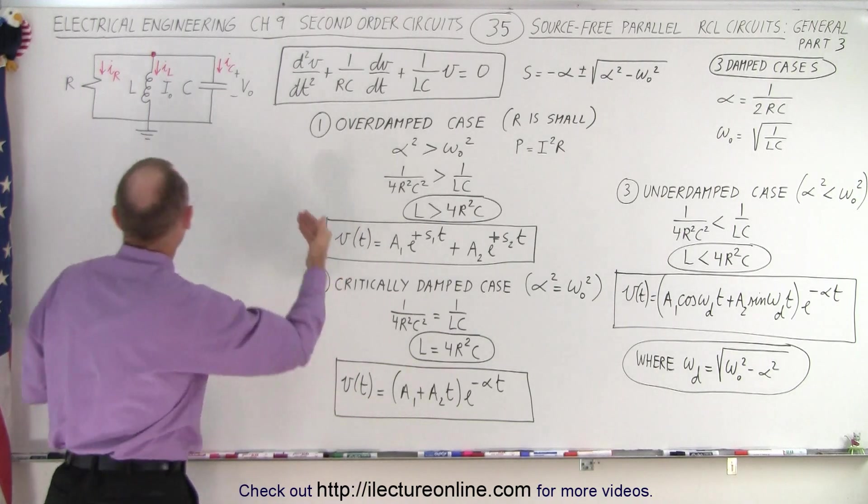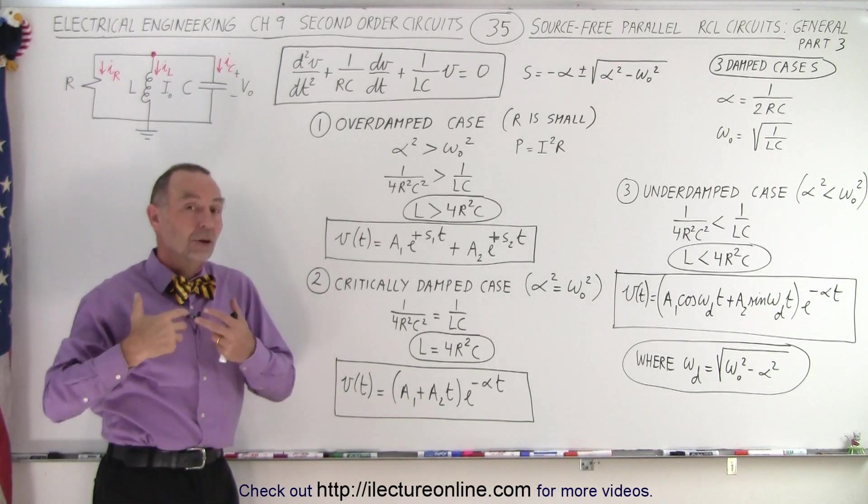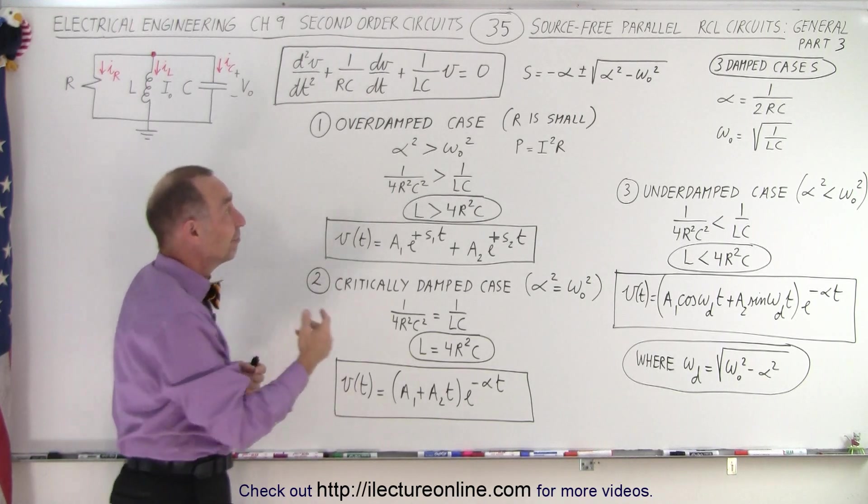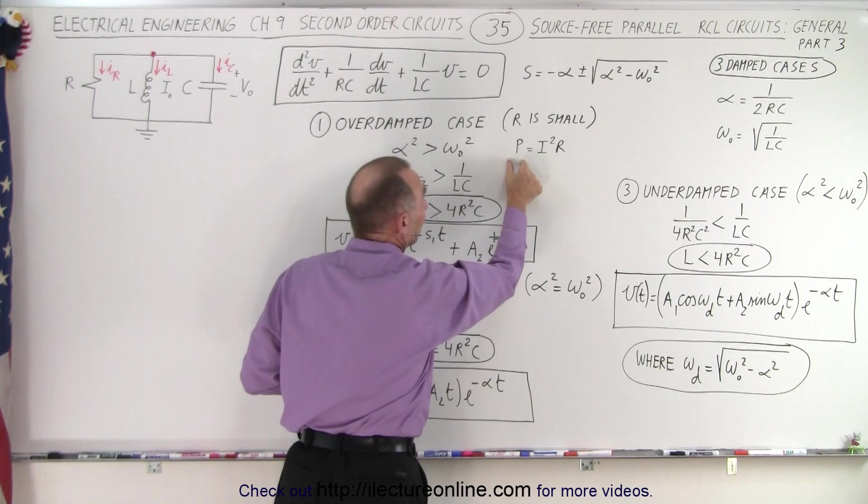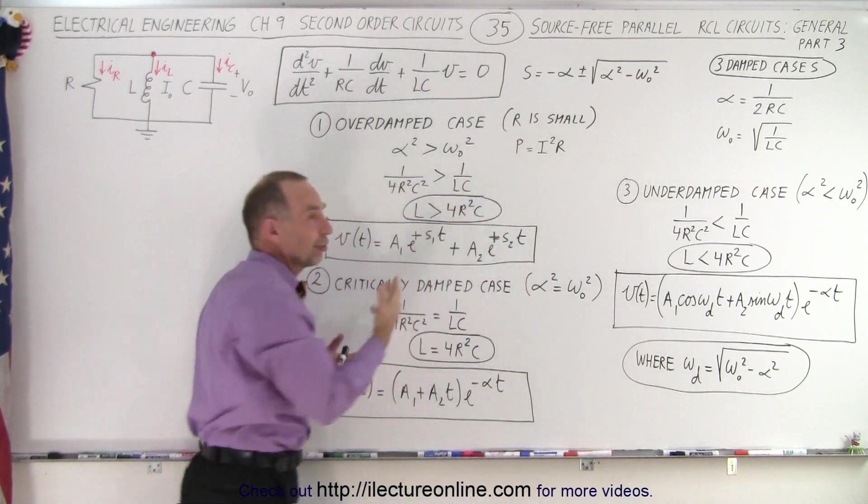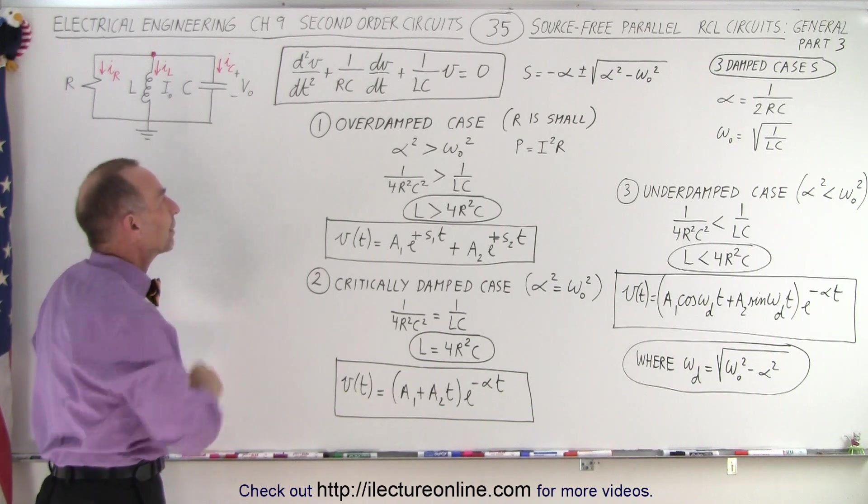consumed by the resistor, and the power consumed by the resistor is I squared R. So if R is small, then there'll be more current flowing through the branch that has the resistor, and of course a larger current squared far outweighs a smaller resistor in the equation here, and so the power will increase, and therefore you have a much quicker dampening effect, and that's called the overdamped case.